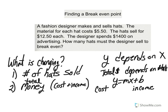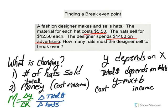Let's look at cost. We know that each hat costs $5.50 to make, and the designer spends $1,400 on advertising right away — so that's all cost. M is the slope, and therefore it's the change in Y over change in X. In our problem, the change in Y is the change in total cost, and the change in X is how many hats we sold. So M for cost is $5.50 per hat sold.